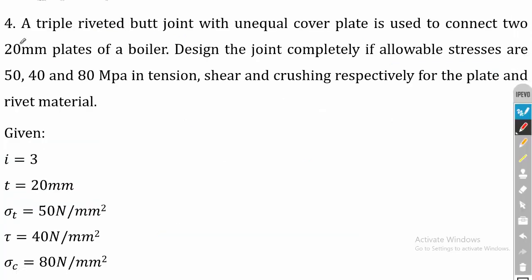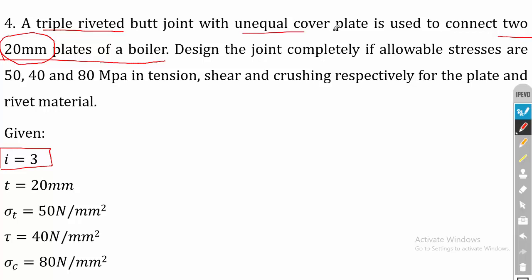The tutorial problem is: a triple riveted butt joint with unequal cover plates is used to connect two 20 mm plates of a boiler. The number of rivets is 3 and T1 ≠ T2, where T1 = 0.75T and T2 = 0.625T. Design the joint completely if the allowable stresses are 50 MPa, 40 MPa, and 80 MPa in tension, shear, and crushing respectively for the plate and rivet material.